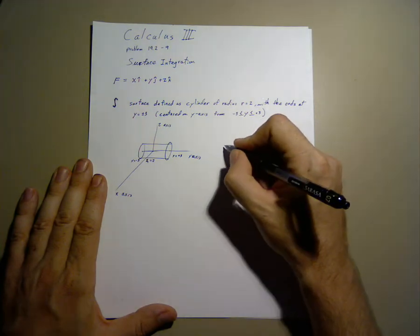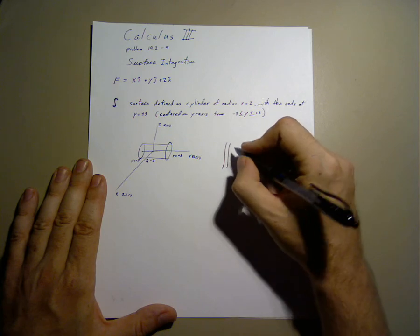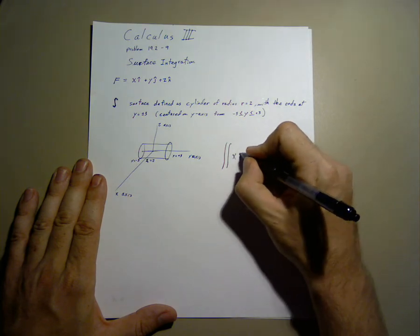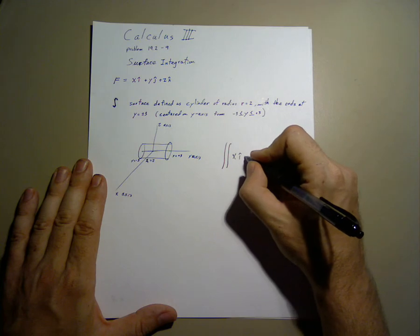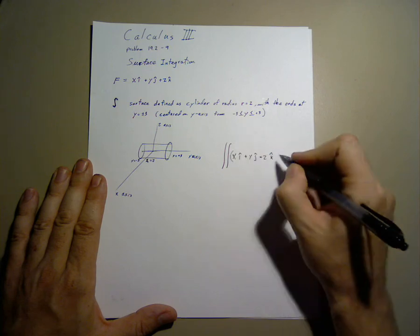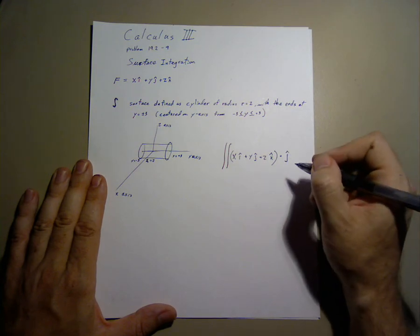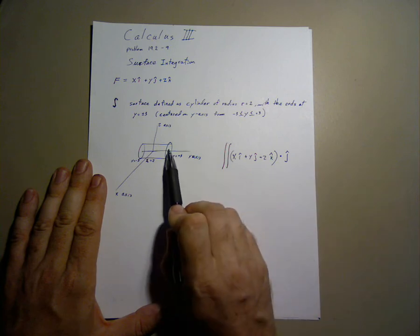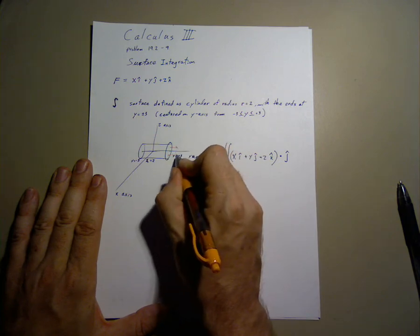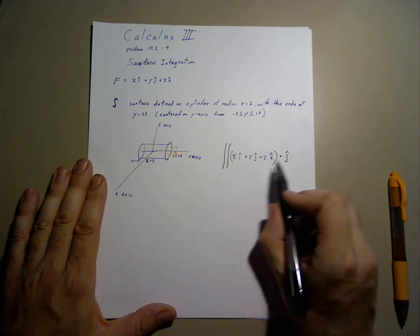For the endpoint, for the ends, we have the integral of y of x i-hat plus y j-hat plus z k-hat dot j-hat. Now, this gives us the amount of flux that's coming out of the ends, out of, namely, this one in particular.